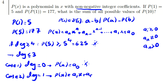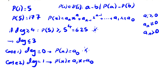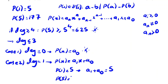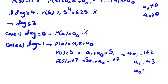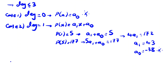For degree 1, replacing x with 1 gives a_1 + a_0 = 5. Replacing x with 5 gives 5a_1 + a_0 = 177. Subtracting the first equation from the second: 4a_1 = 172, so a_1 = 43. Then a_0 = 5 minus 43 = negative 38, which is a contradiction because coefficients must be non-negative integers. So degree 1 is ruled out.